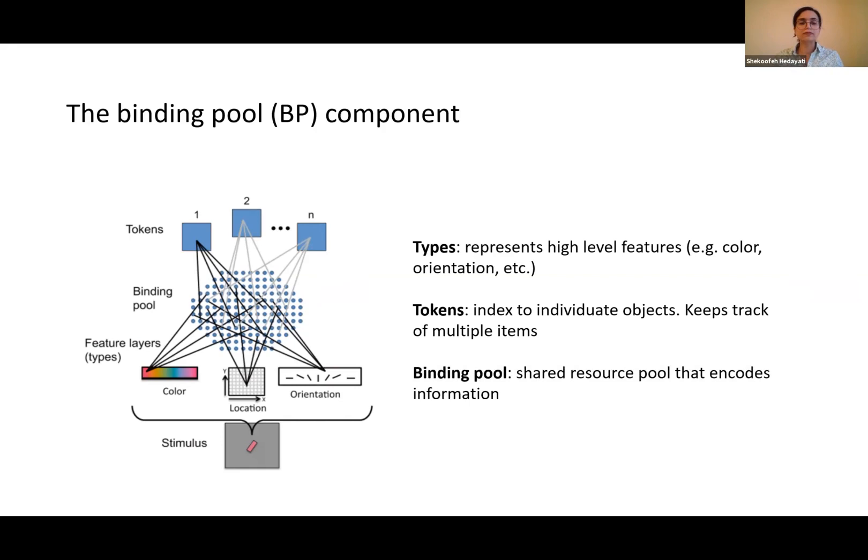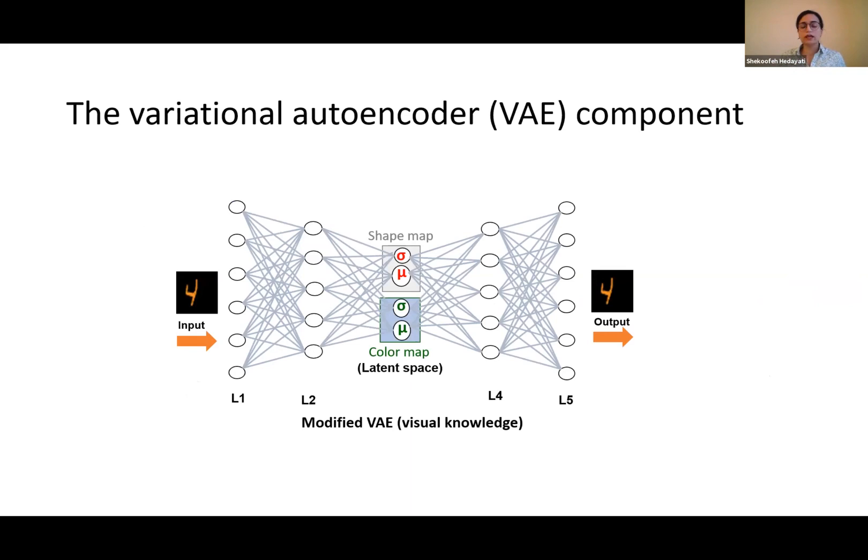For the variational autoencoder, we made some changes. We trained this model on shape and color separately. We divided the latent space to shape and color maps so that we can represent shape in the shape map and color in the color map. The reason to do this was to be able to focus on certain attributes and store them into memory, to implement top-down control and decide which attribute should go to working memory, because working memory is selective.